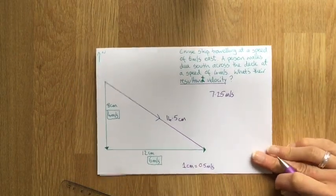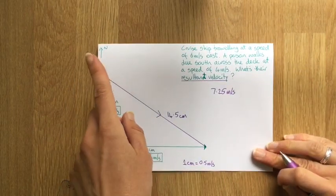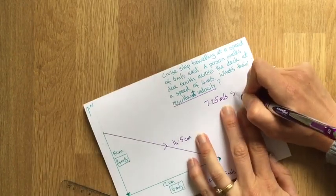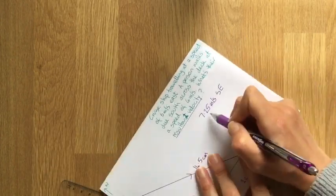And then, because this is a vector quantity, we need the direction. So if that's north, then going this way, that's southeast. So 7.25 meters per second southeast.